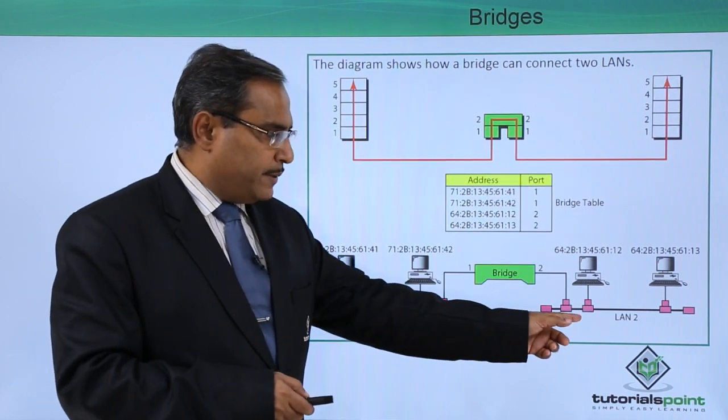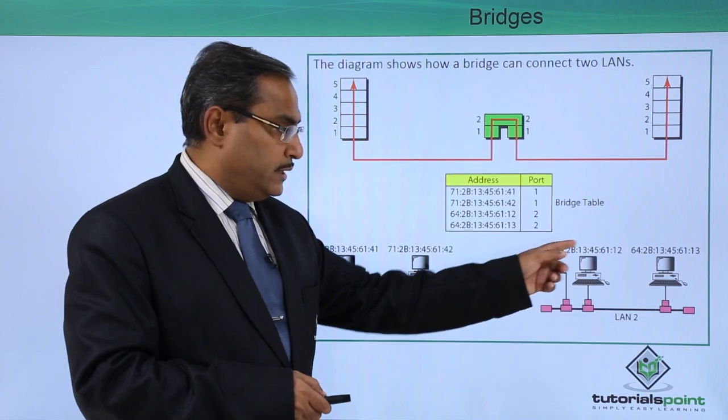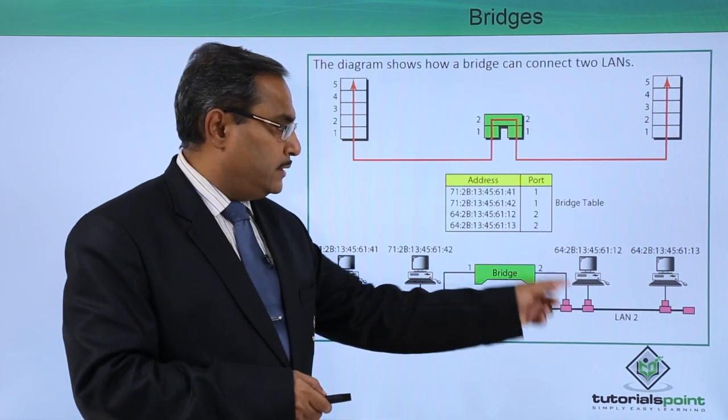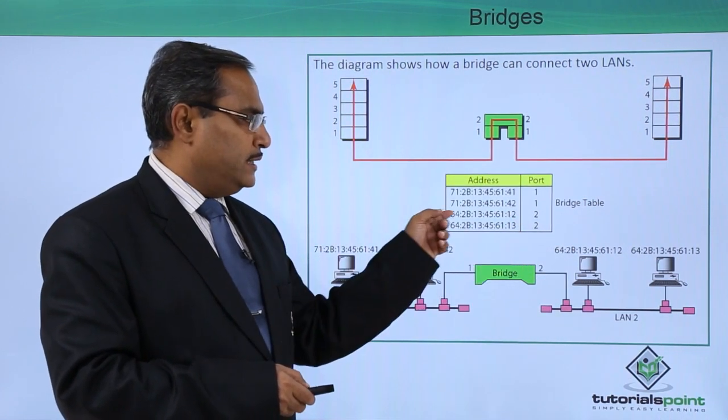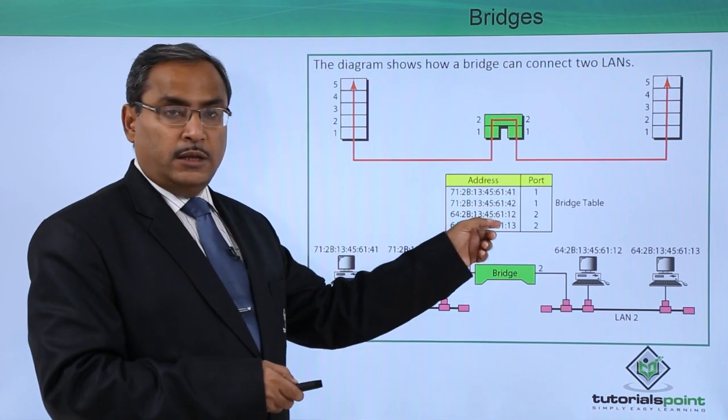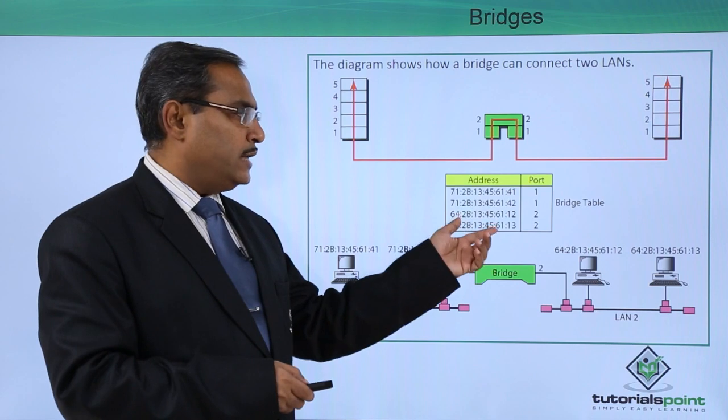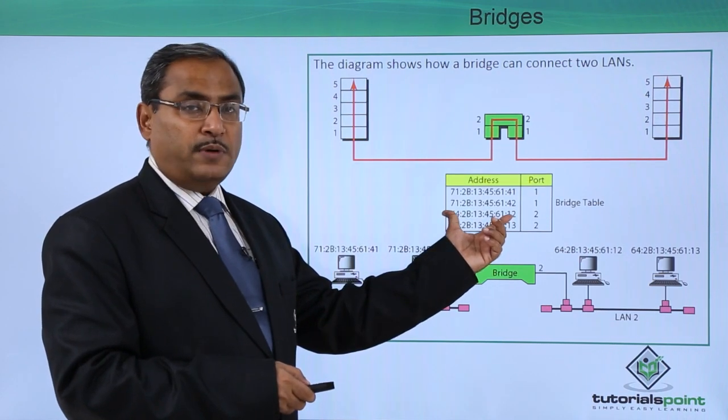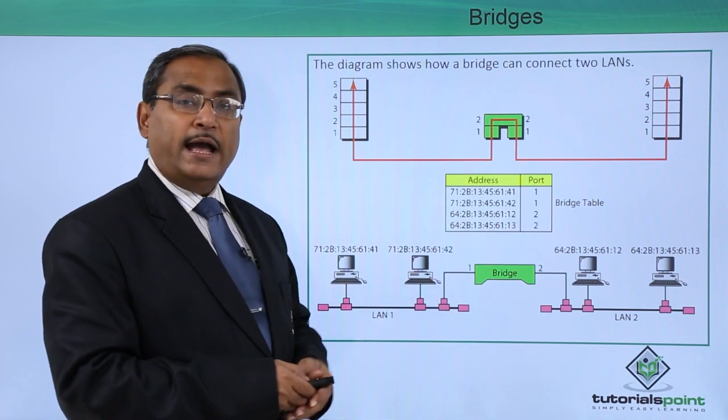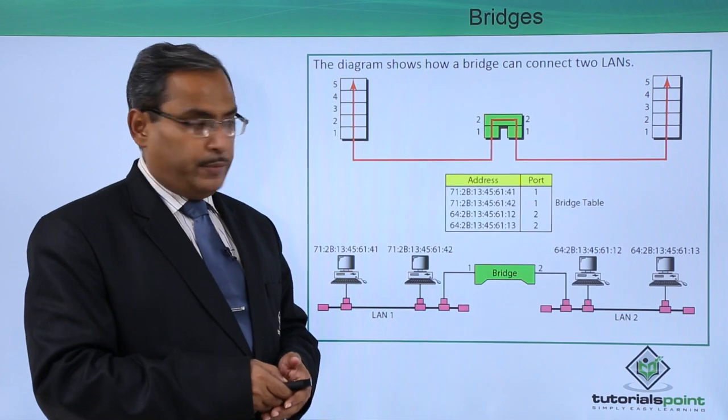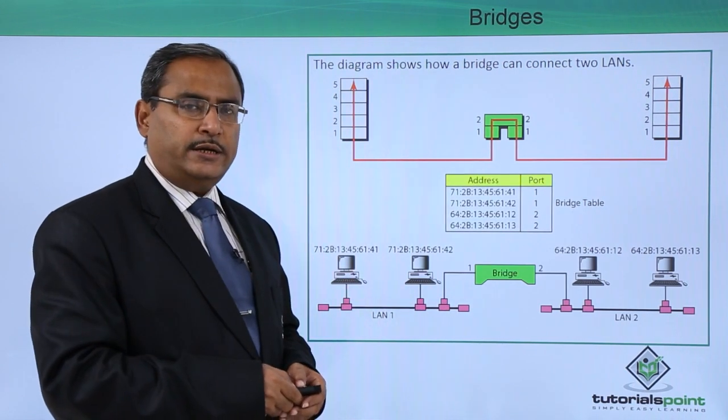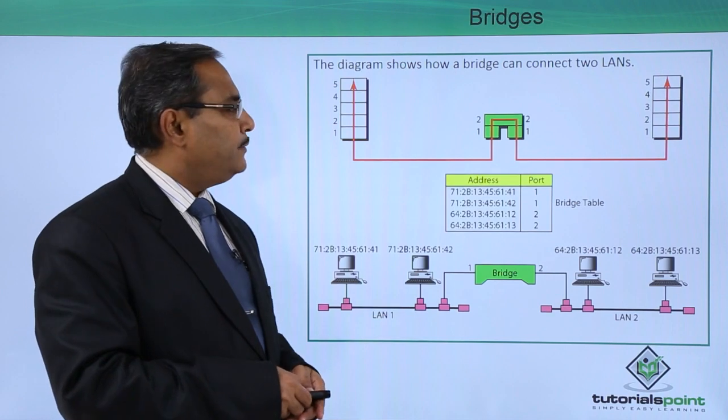And here you can find this is our LAN 2. These are the respective MAC addresses. For port 2, these MAC addresses will be written. Whenever the packets will be coming to bridge, bridge knows which is the MAC address for which node and which is connected at which port of the bridge. Now, how this table is getting generated? Let us discuss on that.